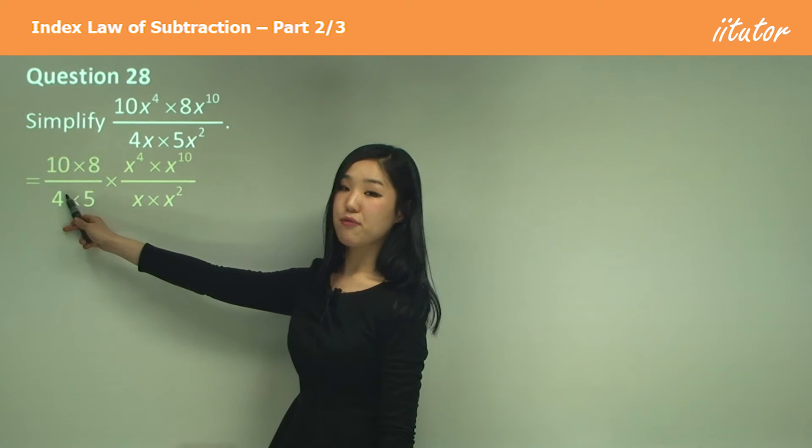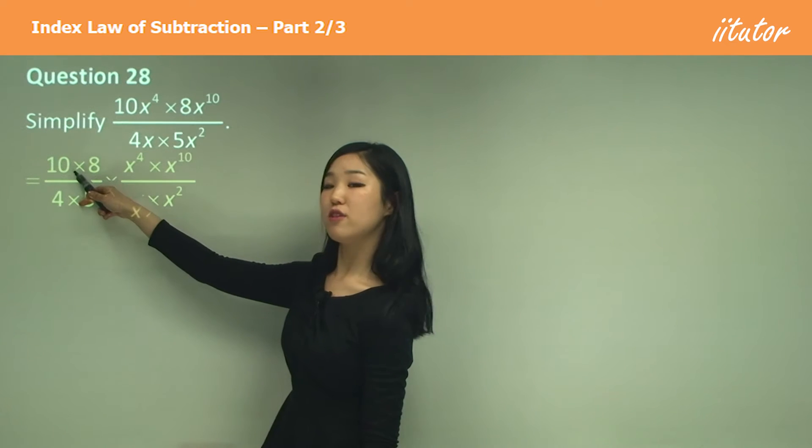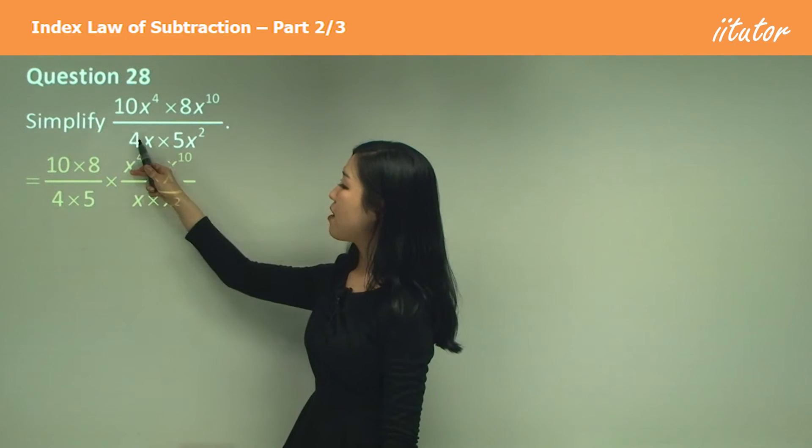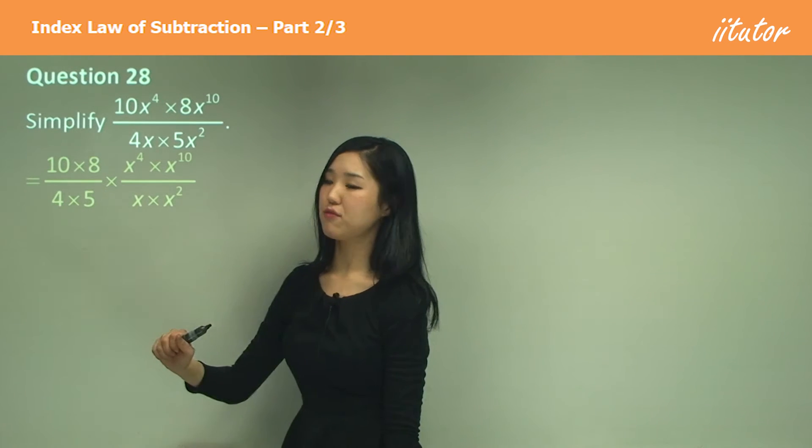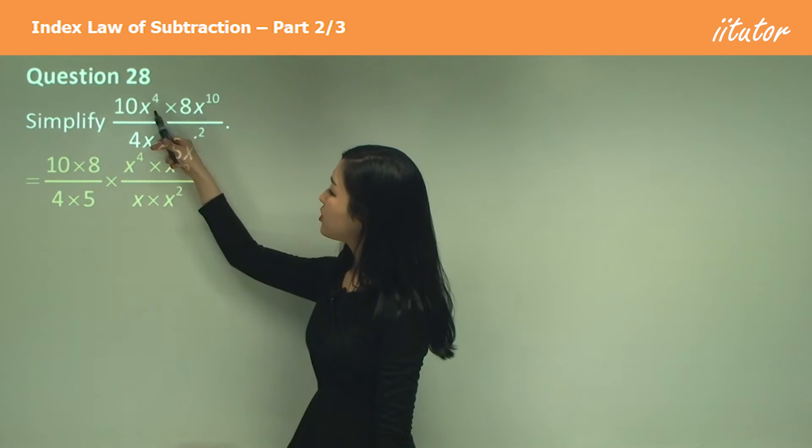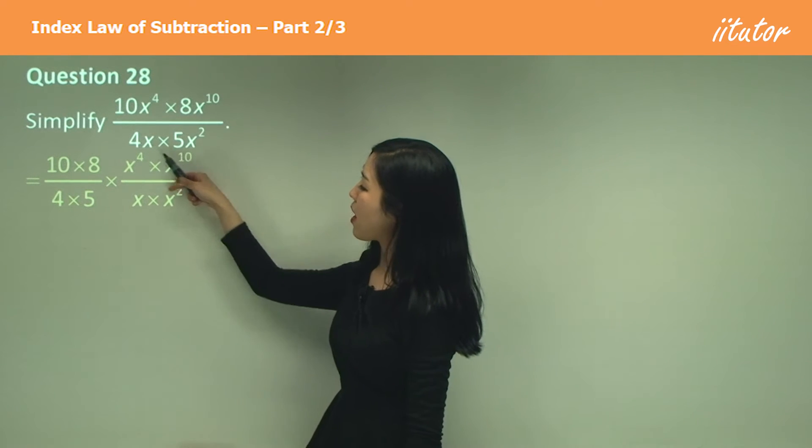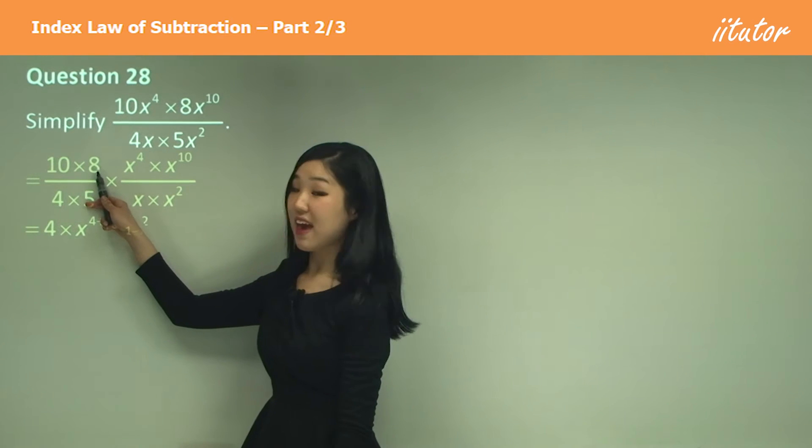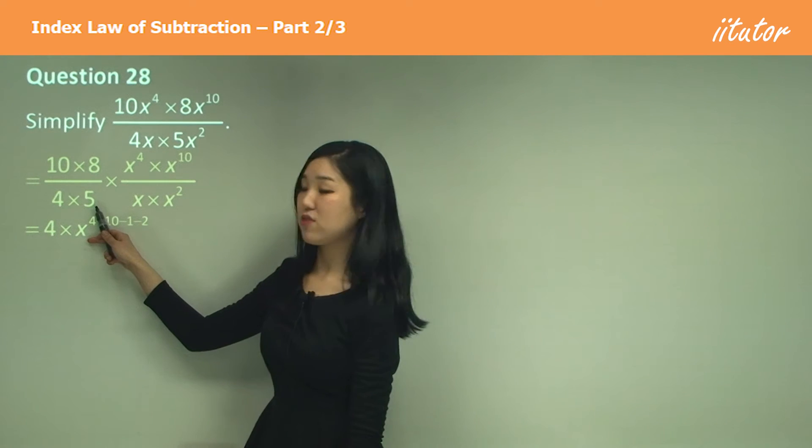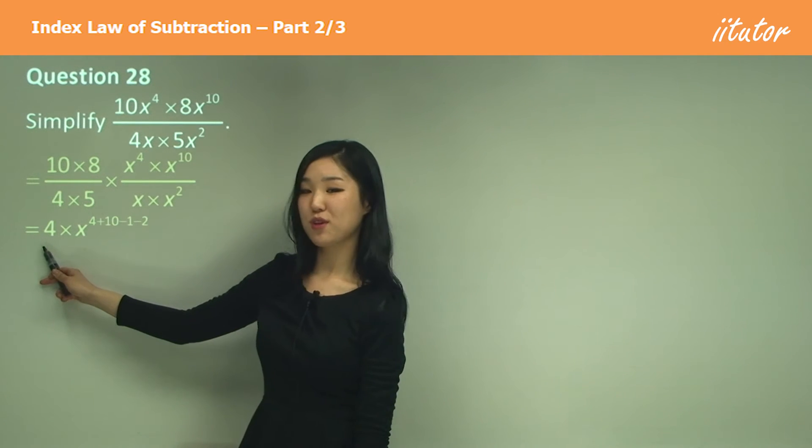I'm going to put all the numbers out the front. I have 10 times 8 on the top divided by 4 times 5 on the bottom. All the numbers shift to the left. Then here we'll have x to the power of 4 times x to the power of 10. On the bottom, we have x times x squared. 10 times 8 is 80, 4 times 5 is 20, so 80 divided by 20 is 4.